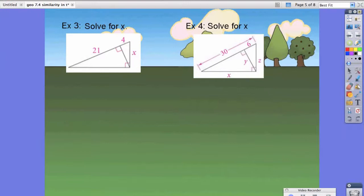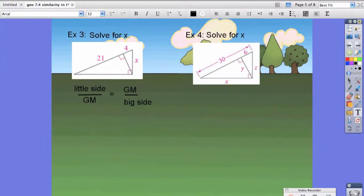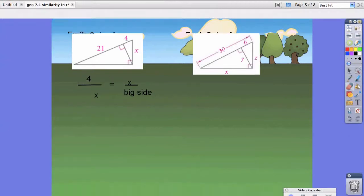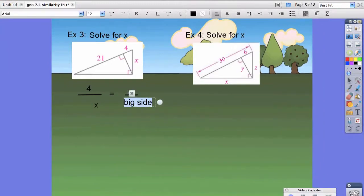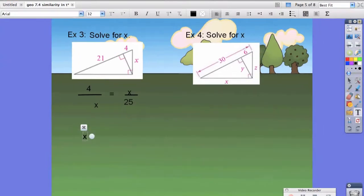Let's try two more just to make sure we have it down. Same exact formula as before. Notice I just keep copying and pasting it. The geometric mean here is x. The little side is going to be 4 because that's the little side that's touching x. The big side is not 21 but rather 25, which is 21 plus 4. We take the cross product again. We get x squared equals 100, or 4 times 25. x equals the square root of 100, which is 10.